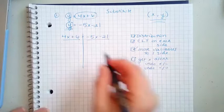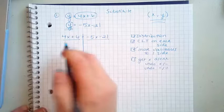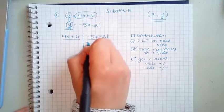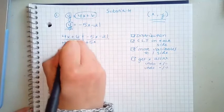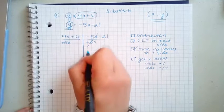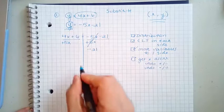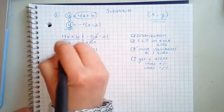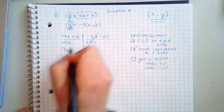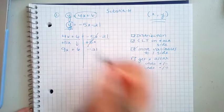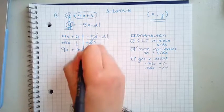So I choose to move this to this side. It doesn't matter which way you go. Plus 5X, plus 5X. This goes away, and I'm left with negative 21 on this side. If I add these two things, I get 9X, and then I bring down my plus 6.